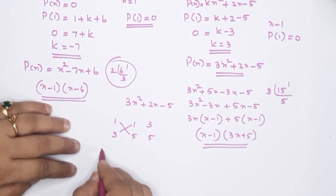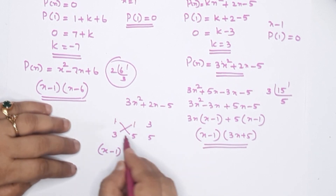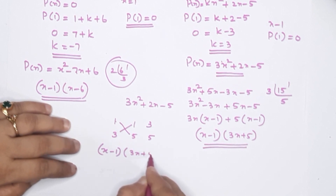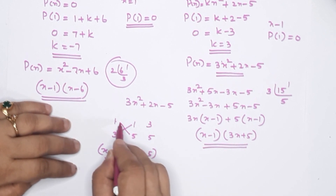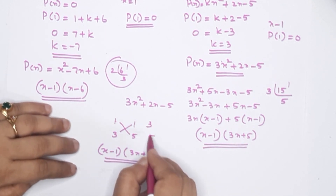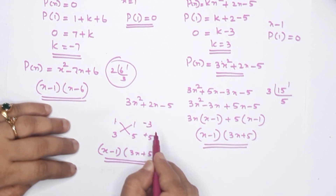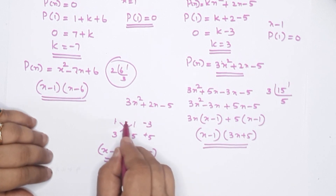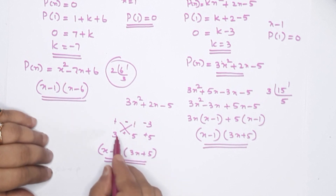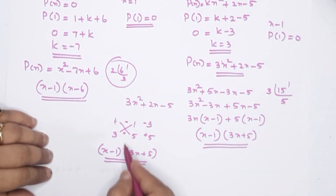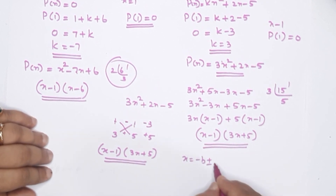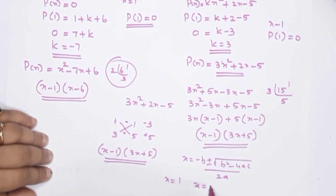So the factors are x minus 1 and 3x plus 5. We can confirm using the quadratic formula: x equals minus b plus or minus root of b squared minus 4ac divided by 2a, giving x equal to 1 and x equal to minus 5 by 3. This confirms the factorization. That is how we do this.